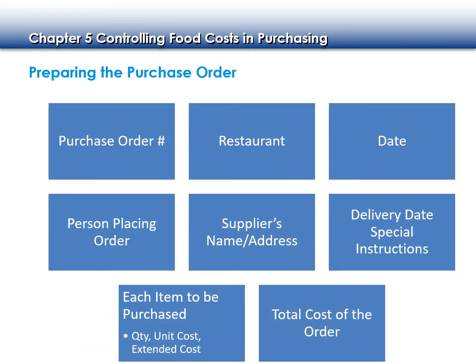The purchase order is done in-house in the restaurant. With this purchase order we're going to have a purchase order number we can reference, the name of the restaurant, the date of the purchase order, and the person placing the order signs it so we can track it back. We definitely want to have the supplier's name and address — especially if we have multiple suppliers — as well as the delivery date and any special instructions.